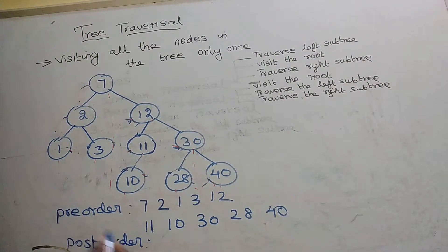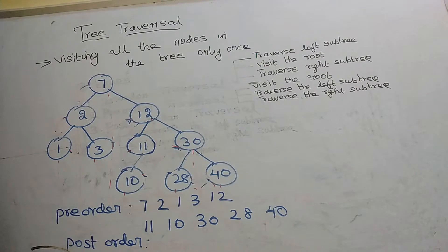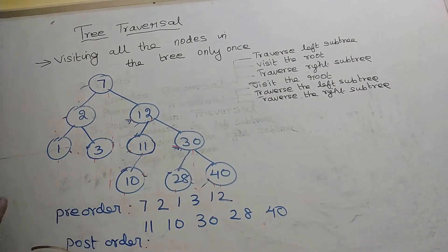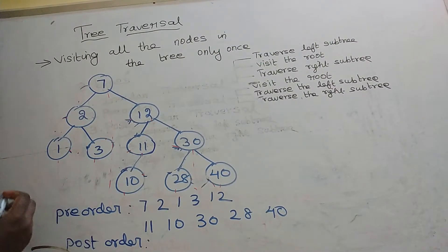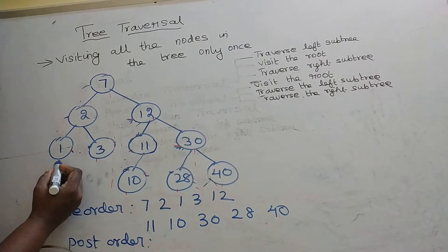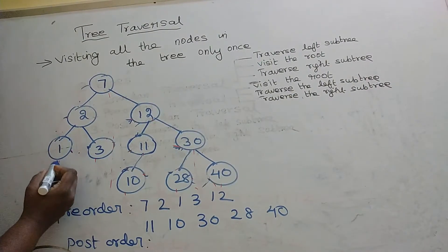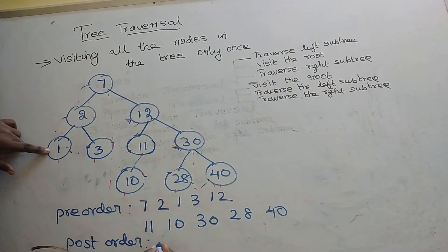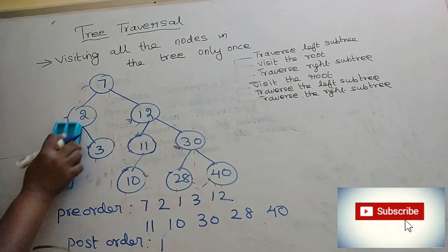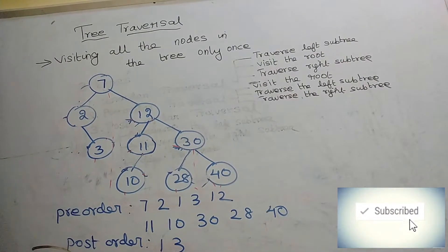In postorder traversal, we have to visit the left subtree, then the right subtree, then print the root. The short way to find the postorder is to print the leaf nodes first. In the left subtree, we print 1, consider it removed, then print 3. After printing 3, it is also removed. Then in this subtree, the leaf is 2, which is also printed.